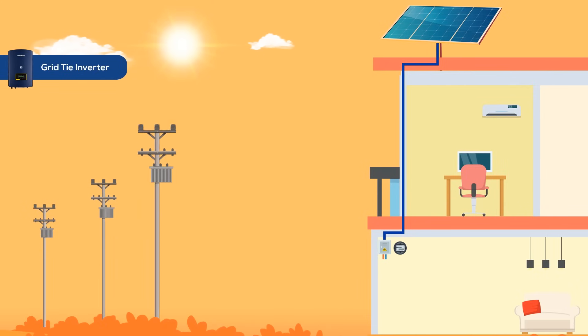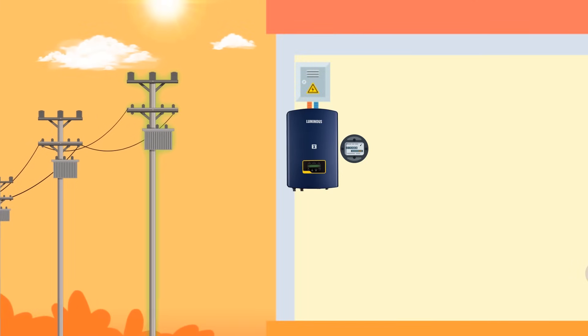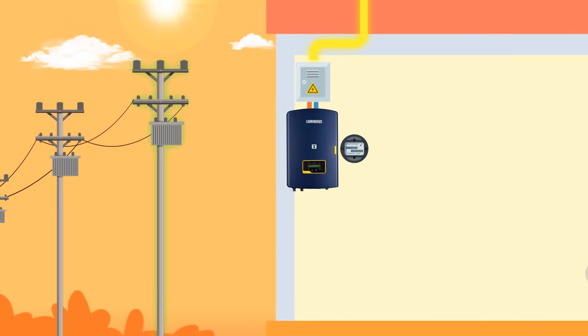Grid-tie inverters are used with solar PV systems that are integrally connected to the utility grid power. They must connect to the grid to function. The electricity produced by the solar system which is not consumed in the property is automatically injected into the grid via a bi-directional meter.